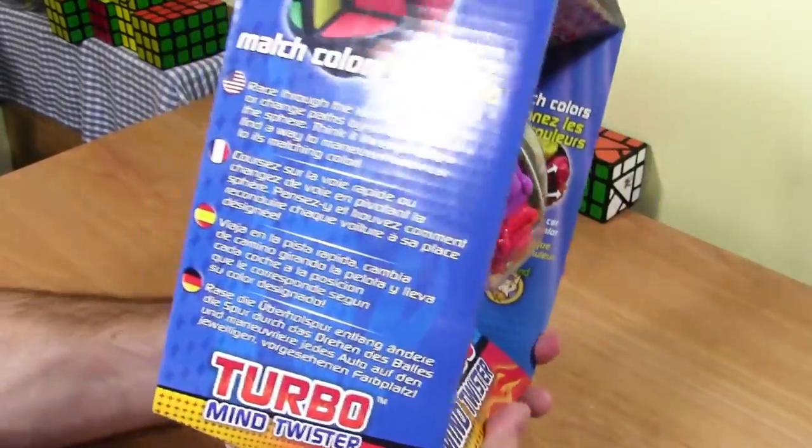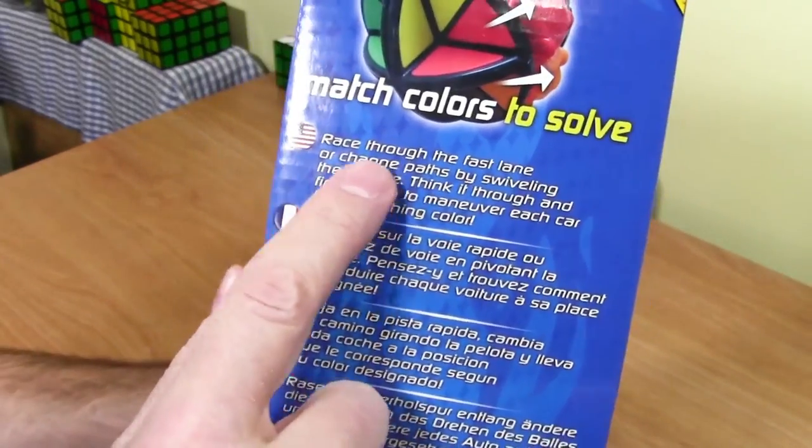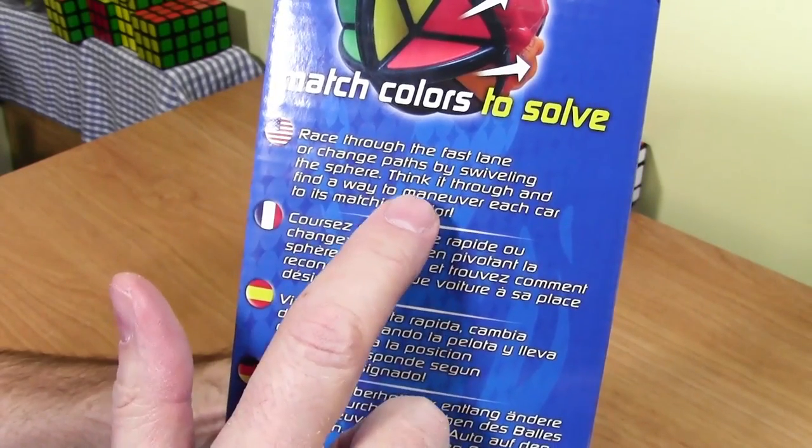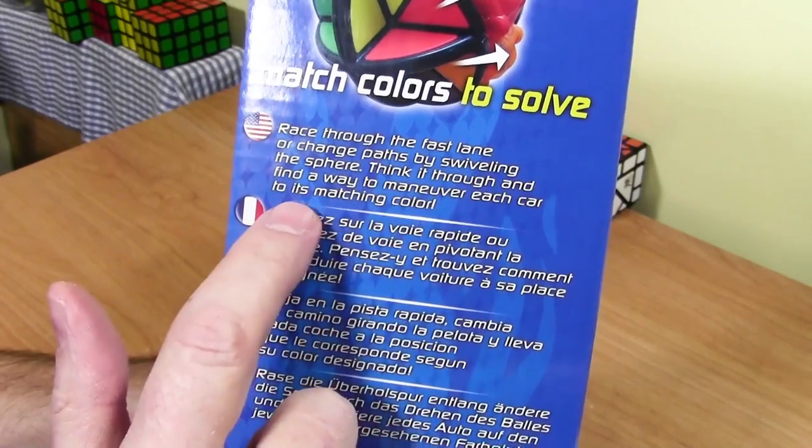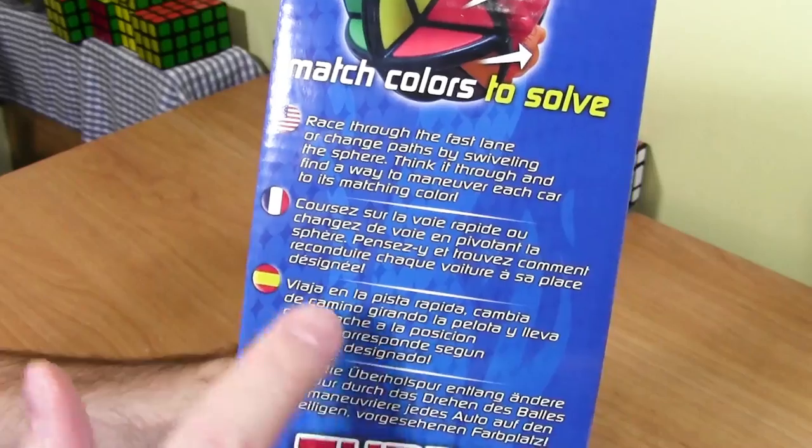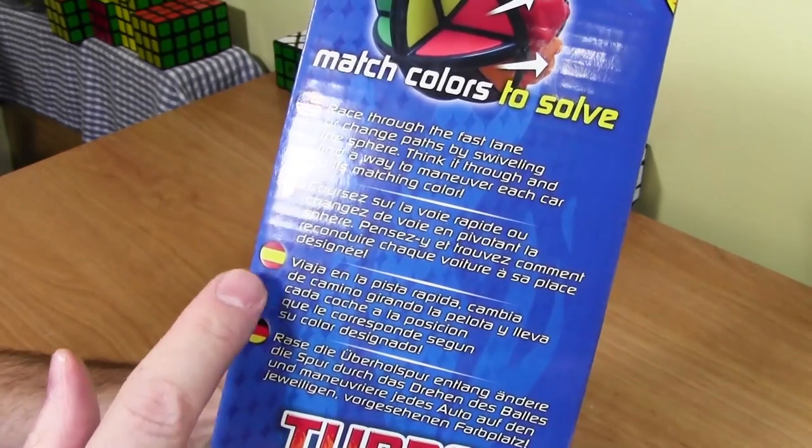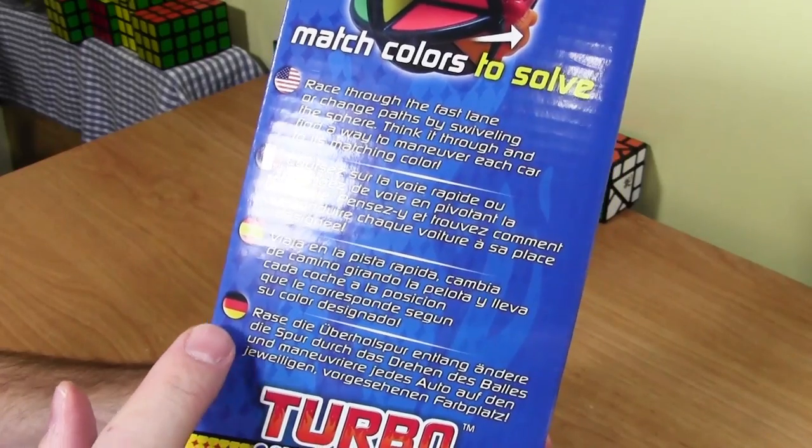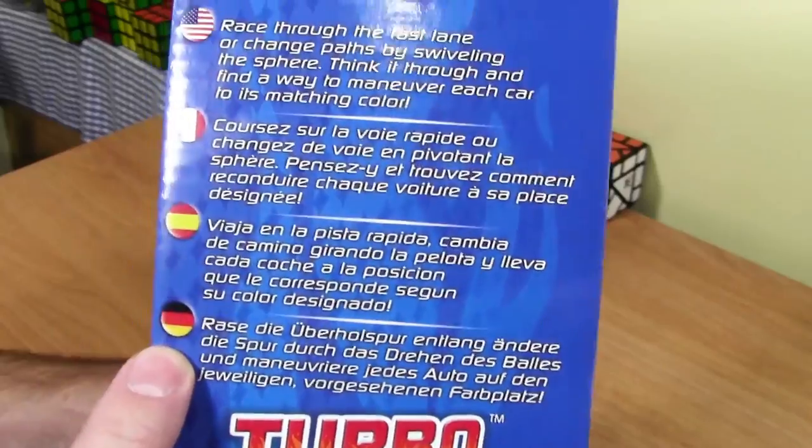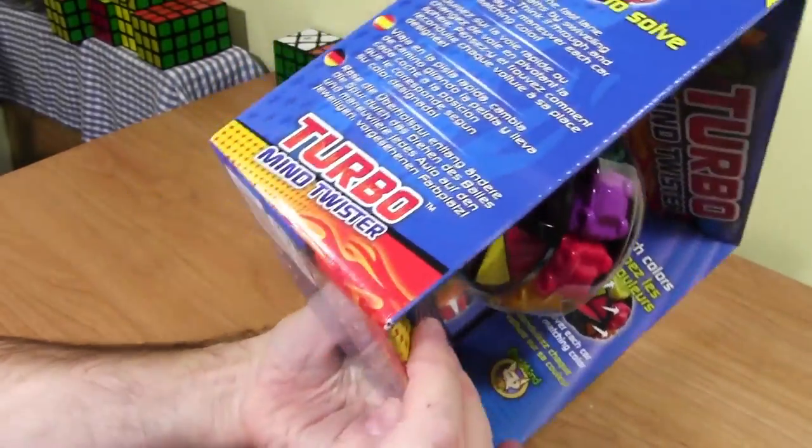And then on this side, it looks like we have American, and it says race through the fast lane of change pass by swiveling the sphere. Think it through and find a way to maneuver each car to its matching color. And then it has French, it has Spanish, and I would sort of guess German down there. So that's kind of interesting, so many different languages on there.